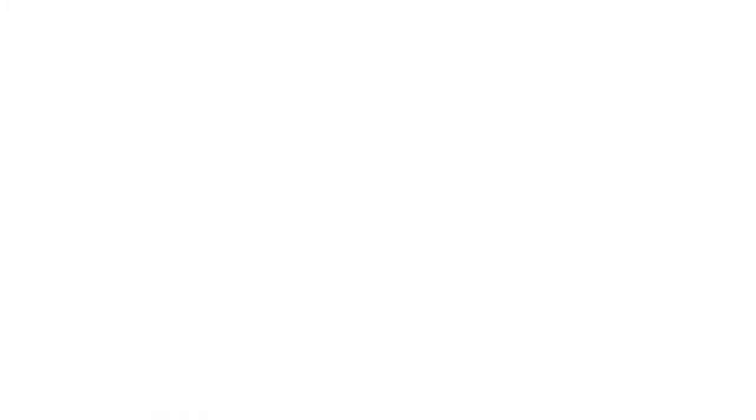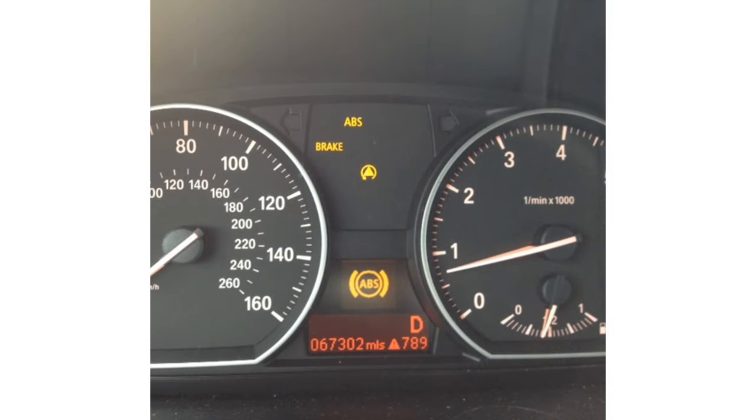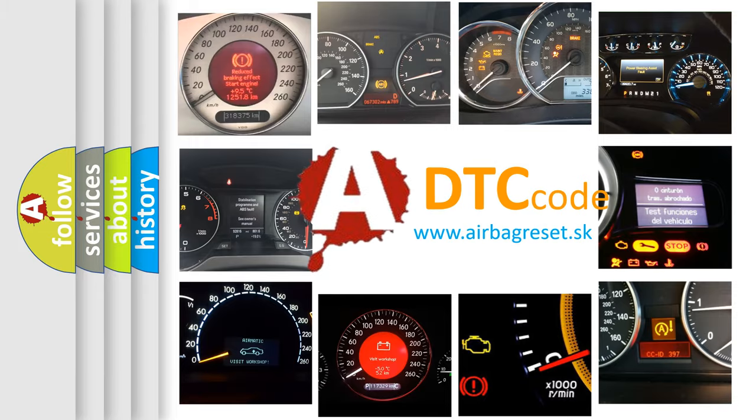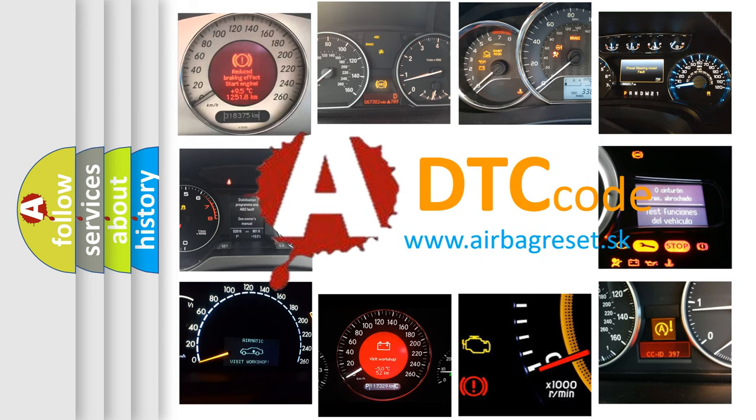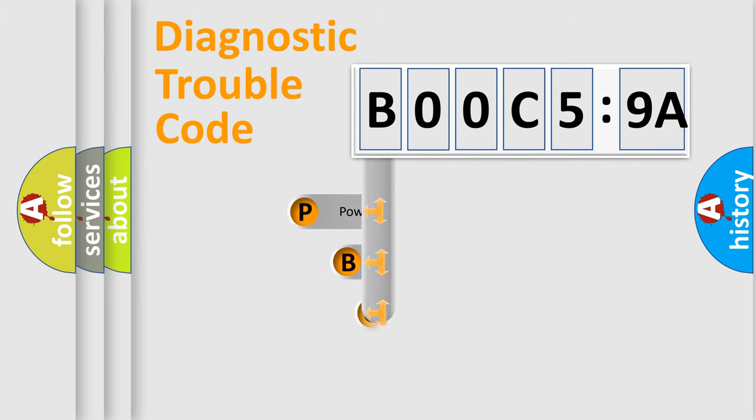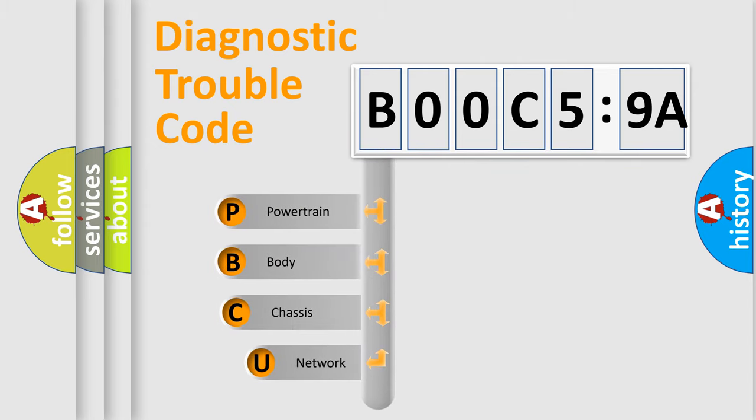First, let's look at the history of diagnostic fault code composition according to the OBD2 protocol, which is unified for all automakers since 2000. We divide the electric system of automobiles into four basic units: Powertrain, Body, Chassis, and Network. This distribution is defined in the first character code.